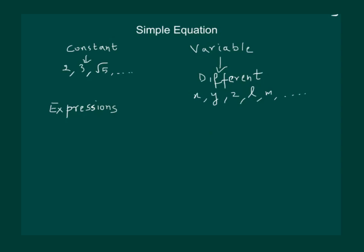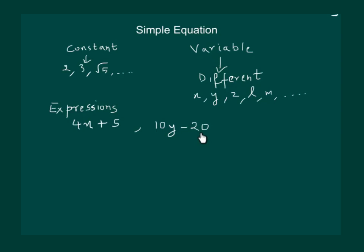Next are expressions. Expressions are formed by performing operations like addition, subtraction, multiplication, or division on the variables and constants. For example, consider the expression 4x plus 5. To form this expression, we multiplied 4 with x and then added 5 to the product. Similarly, we can also have 10y minus 20. To form this expression, we multiply y with 10 and then subtract 20 from the product. Both of these are examples of expressions.